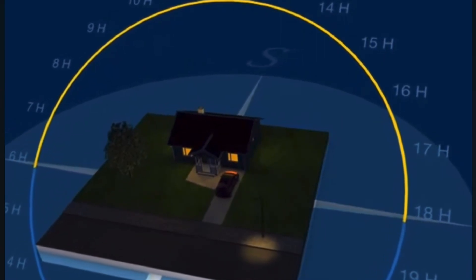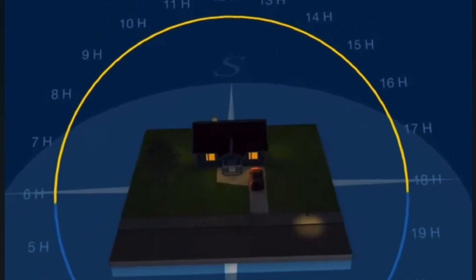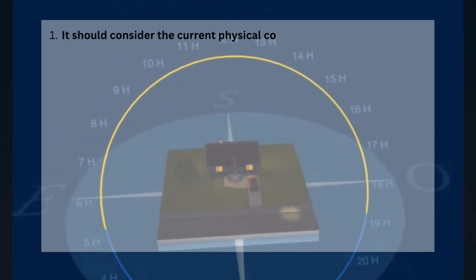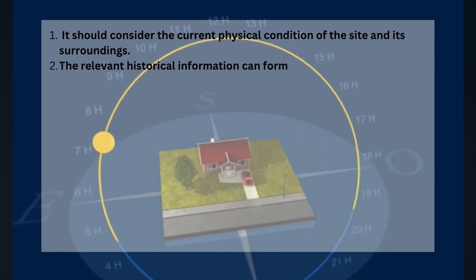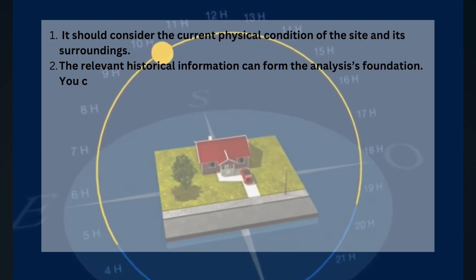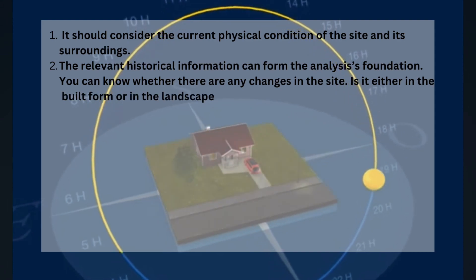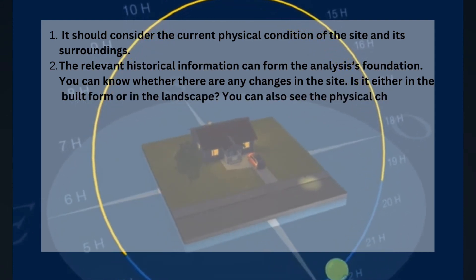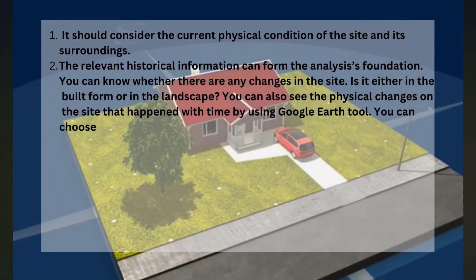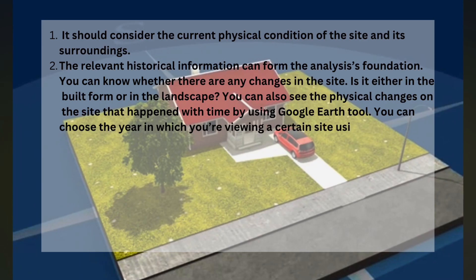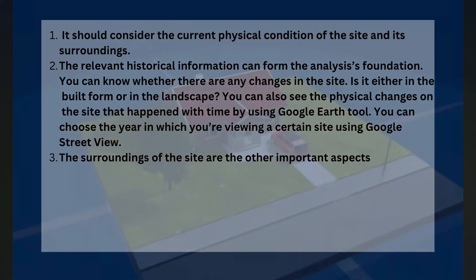Let's discuss what you need to keep in mind to proceed with site analysis. Number one, it should consider the current physical condition of the site and the surroundings. Number two, the relevant historical information can form the analysis foundation. You can know whether there are any changes in the site, either in the built form or in the landscape. You can also see the physical changes on the site that happened with time using the Google Earth tool, and choose the year in which you were viewing a certain site using Google Street View.